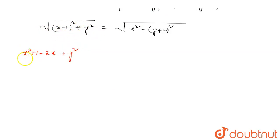This is LHS, this is x minus 1 whole square and this is y square. On the RHS, x square as it is.